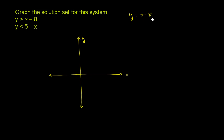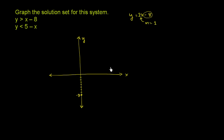The y-intercept here is negative 8. When x is 0, y is going to be negative 8. So the point (0, negative 8) is on the line. And then it has a slope of 1 — we can write it as 1x.